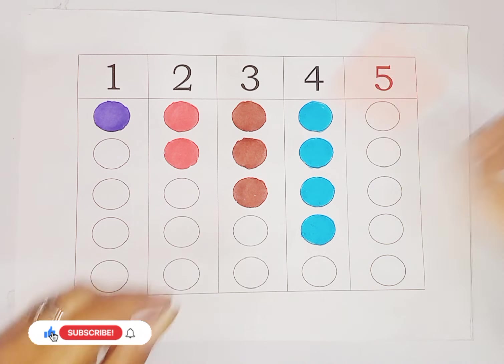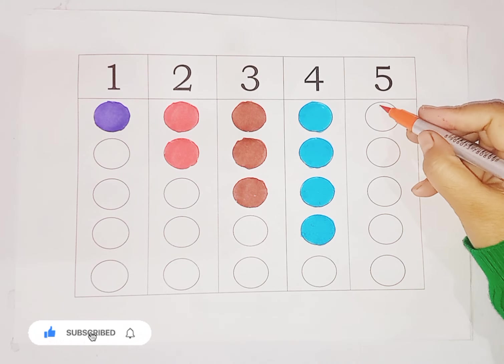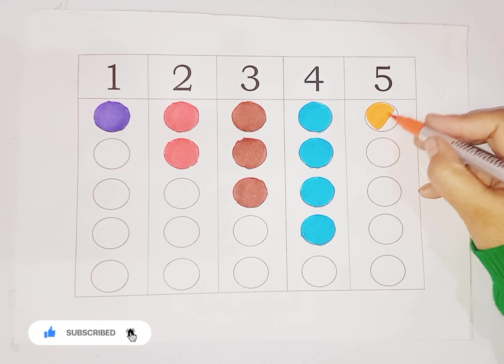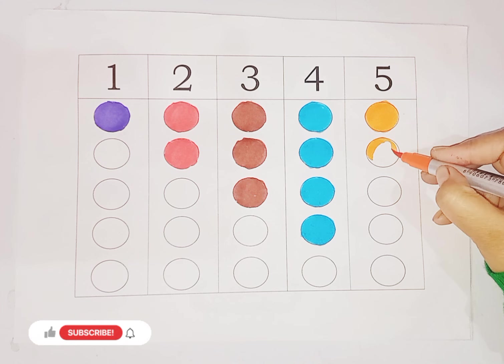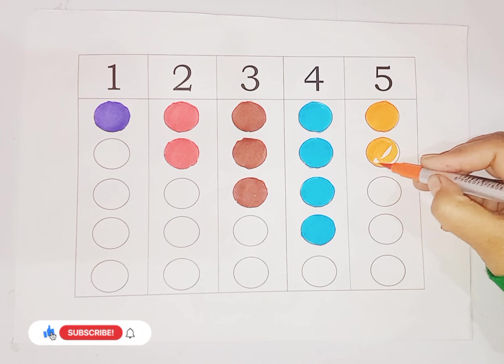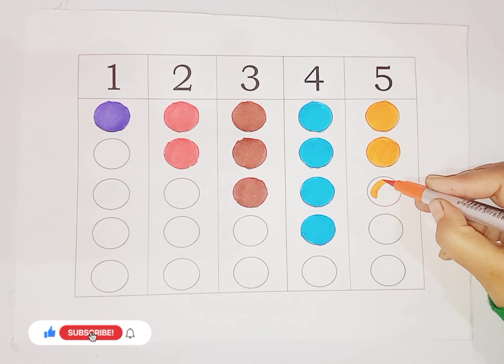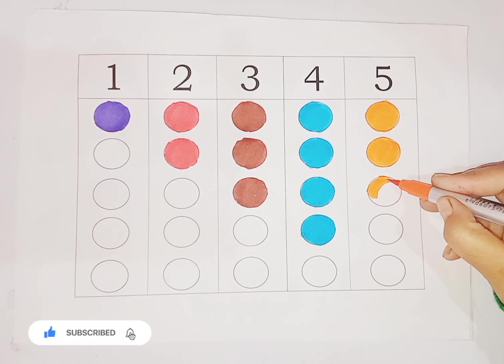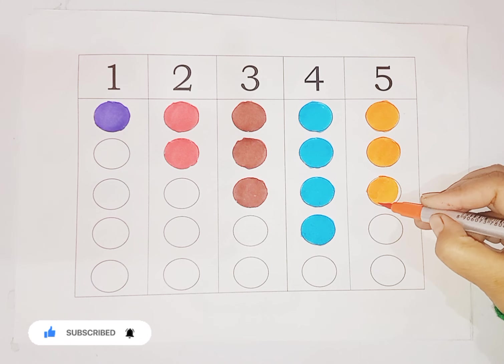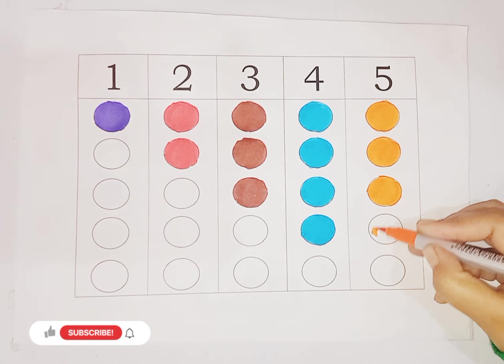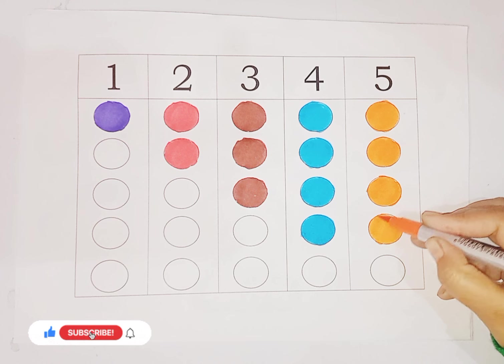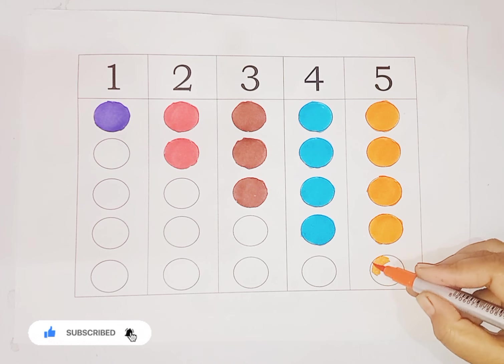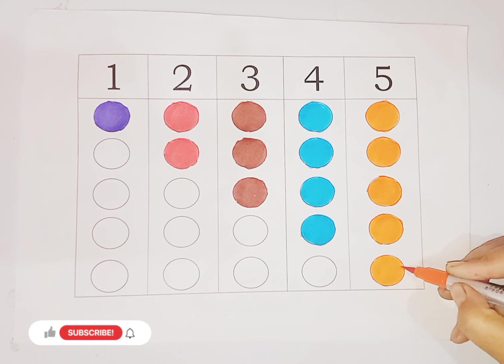Now orange color, number 5. And we color in 5 circles. One, two, three, four, five.